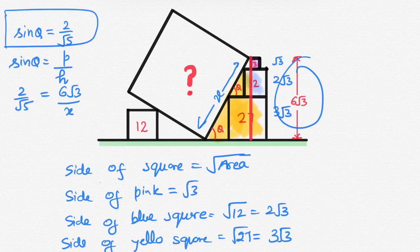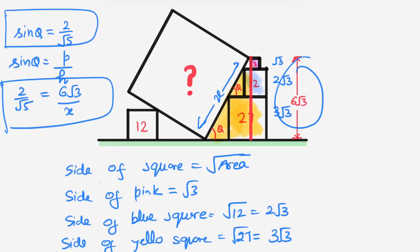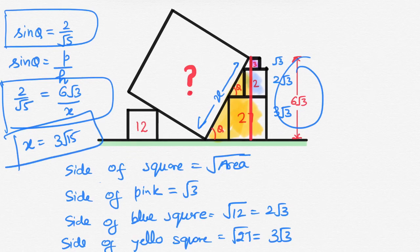Now, on solving this equation, you can get x equals to 3 root 15. Now, we have to find what? We have to find the area of toppled square.